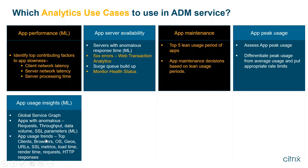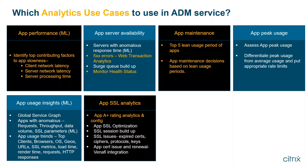ADM also helps you identify app usage trends: top clients, browsers, OSes, geographies, URLs, HTTP responses, SSL metrics, load time, and render time. For app SSL analytics, we recently introduced a feature to assess if your application is rated A+ as per Qualys SSL Labs, and provides a quick way to deploy the A+ configuration. Additional SSL parameters include SSL optimization to optimize various SSL parameters, SSL session build-up detection, and visibility into all certificates bound to your application.